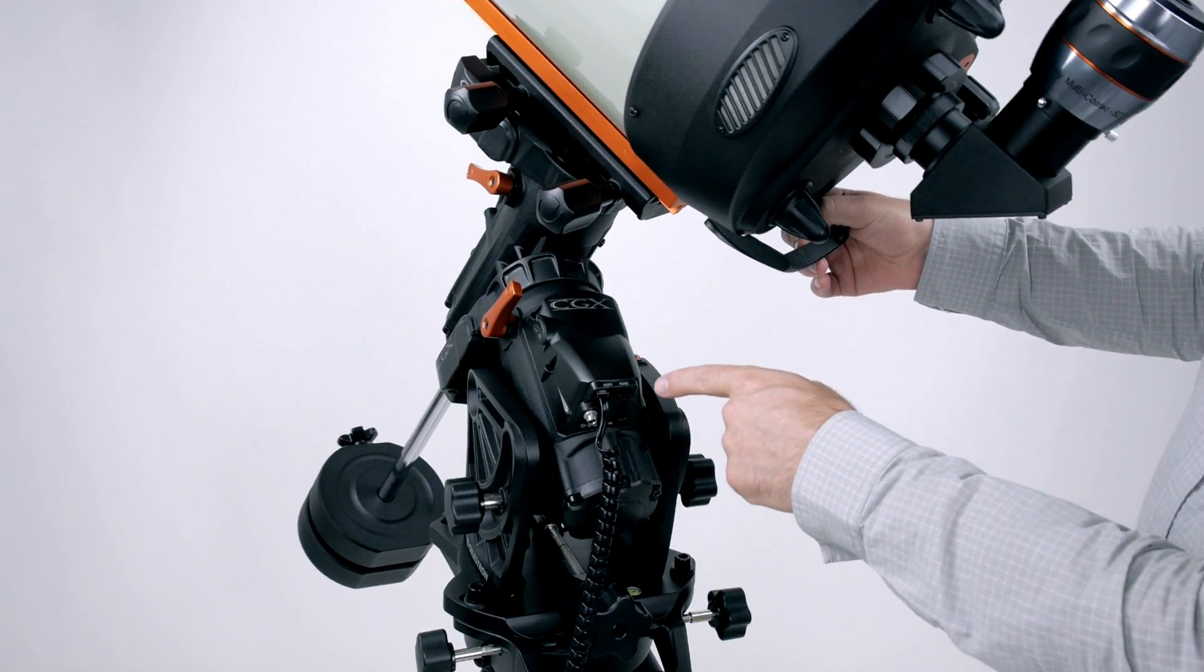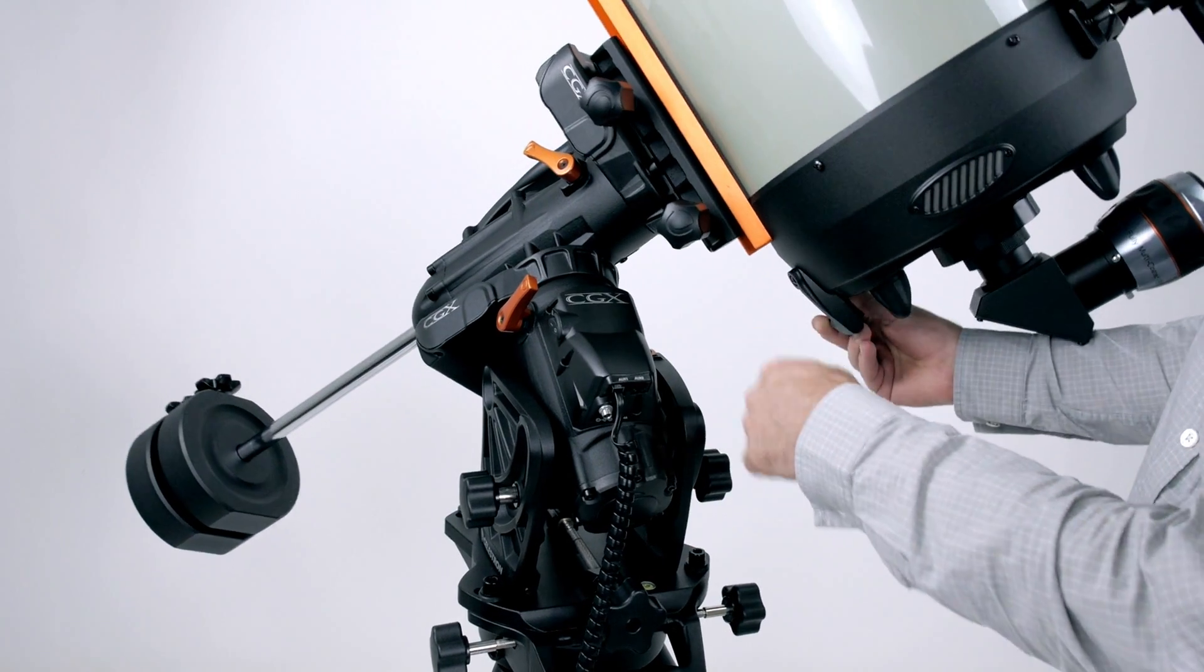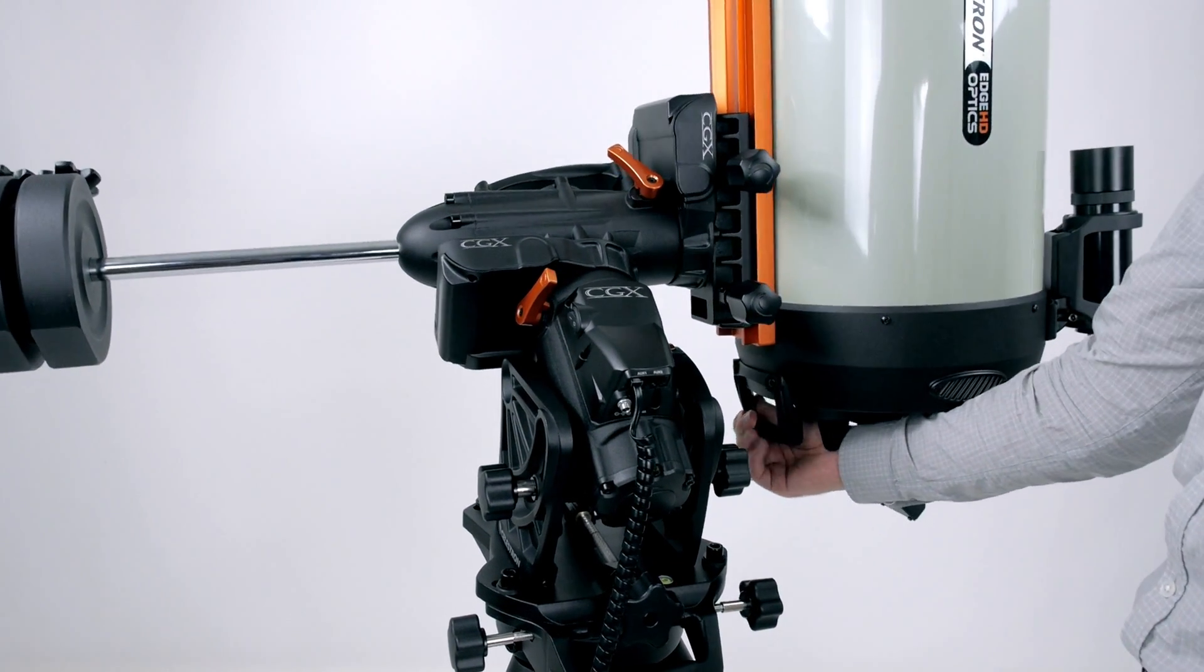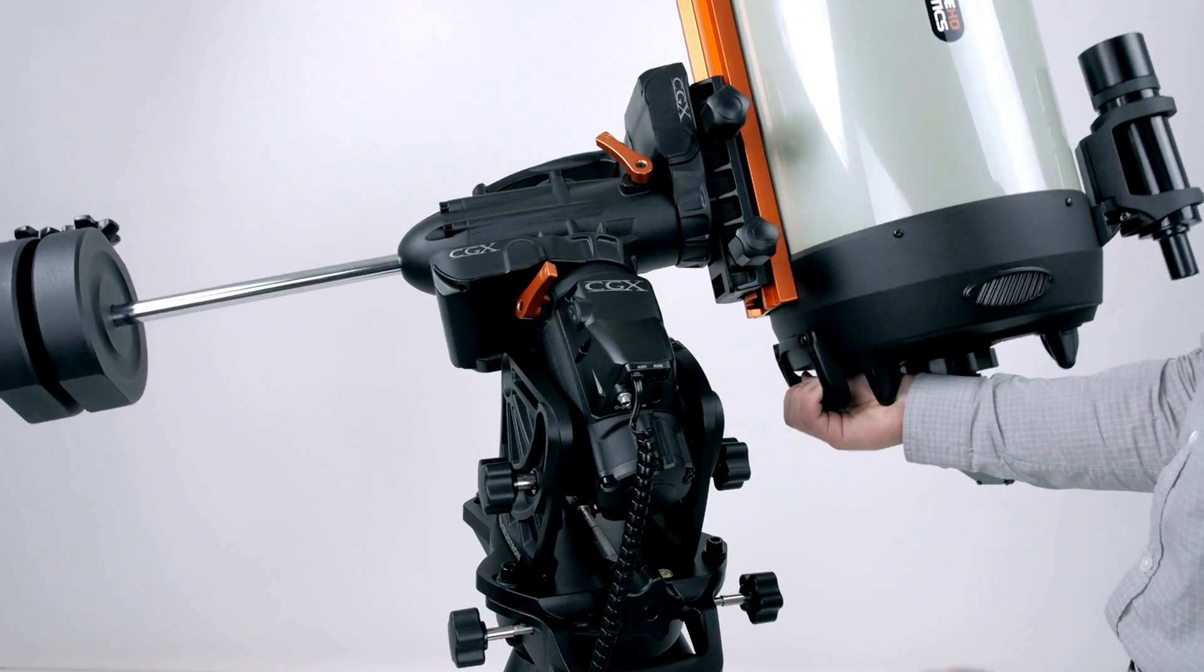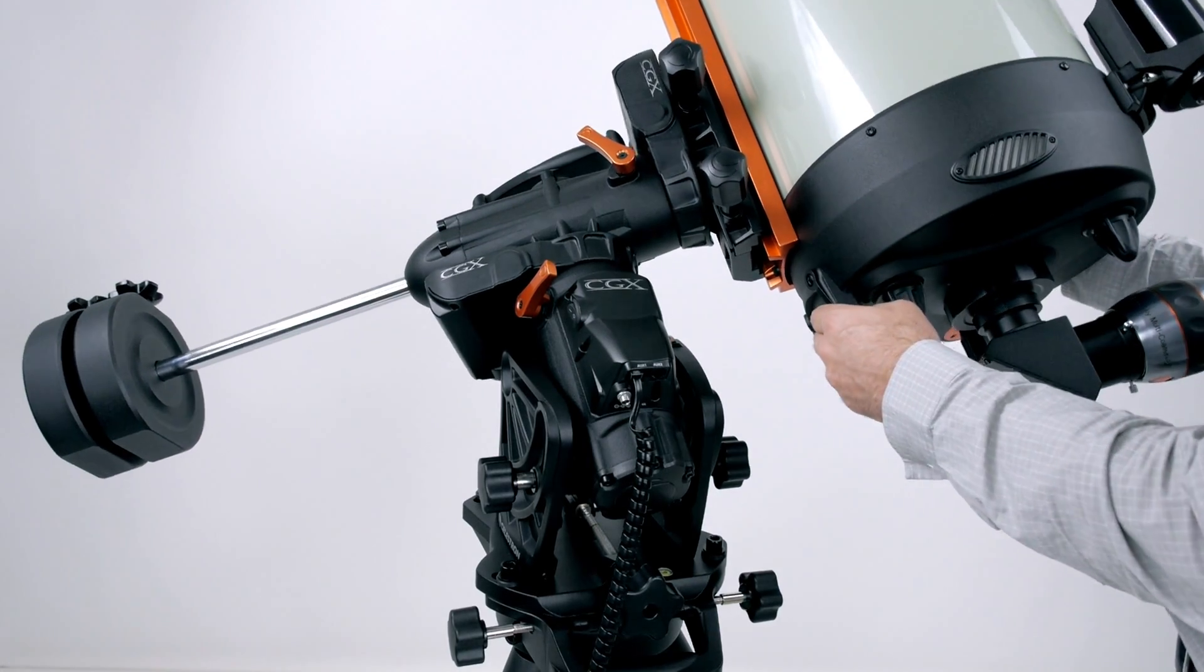And as a result, you can see that your hand control and your power port, any potential accessories, they do not move as the mount moves across the sky. And you've greatly reduced any chance of having any unwanted cable snags.